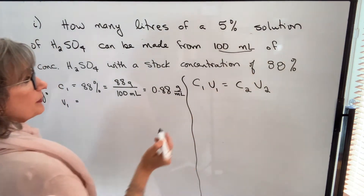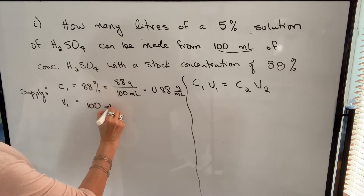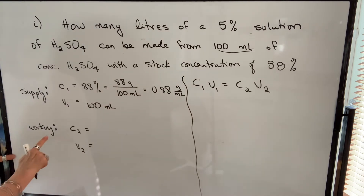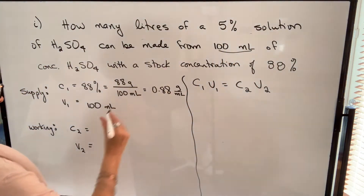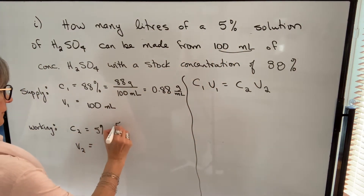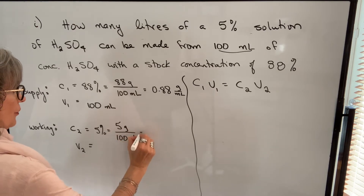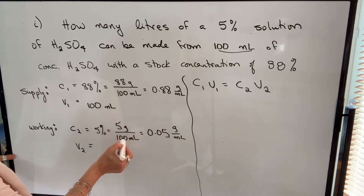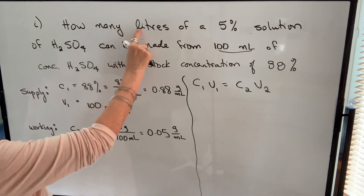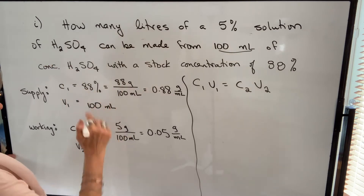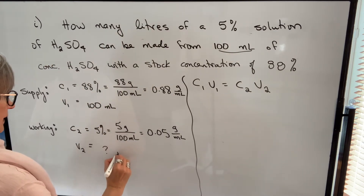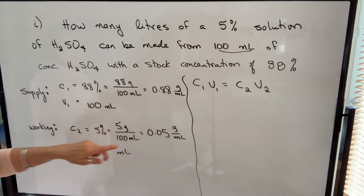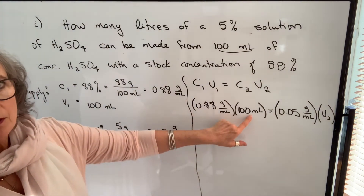We're taking 100 milliliters of that 88% solution. Since concentration is in grams per milliliter, volume must be in milliliters. The working solution has a concentration of 5%, which is 5 grams per 100 milliliters, or 0.05 grams per milliliter. I want grams per milliliter, not grams per 100 milliliters. I'll initially find the volume in milliliters. Now I can plug into C1V1 equals C2V2.